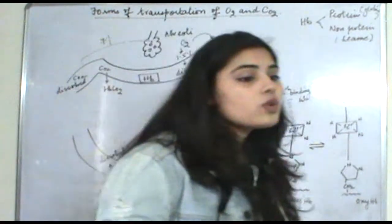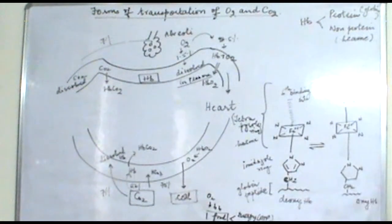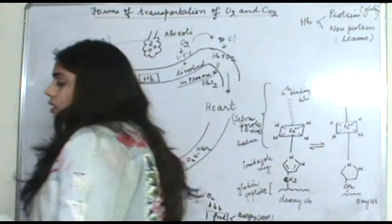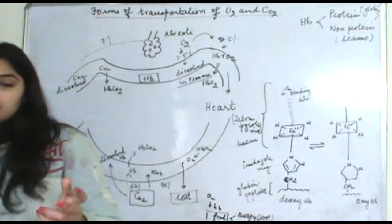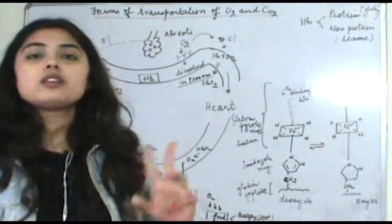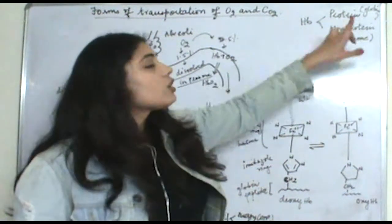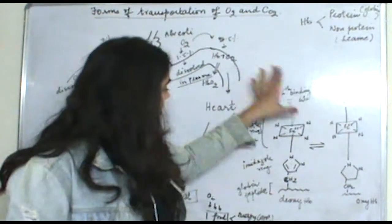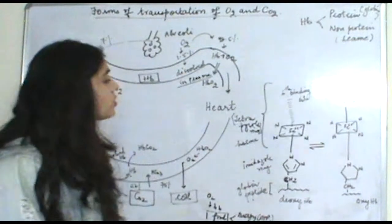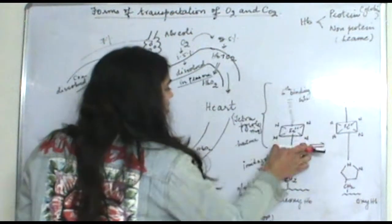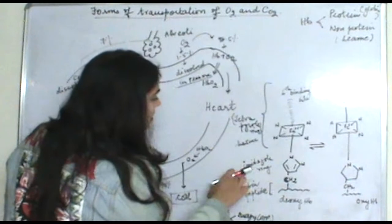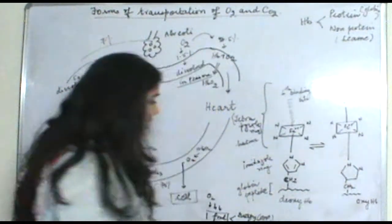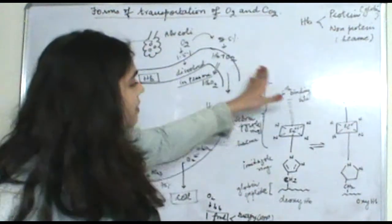Now if we are talking about hemoglobin — oxyhemoglobin, deoxyhemoglobin — we first need to know about hemoglobin structure. Hemoglobin is a conjugated molecule, which means it consists of both a protein and a non-protein part. The protein part is the globin part and the non-protein part is the heme part. In the diagram, this portion is the heme part and this portion is the globin peptide.